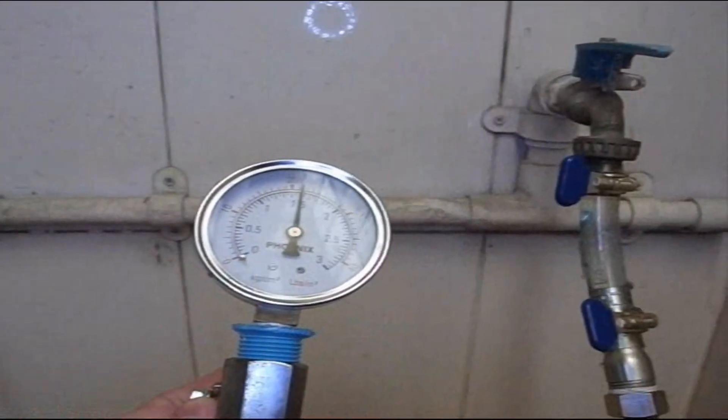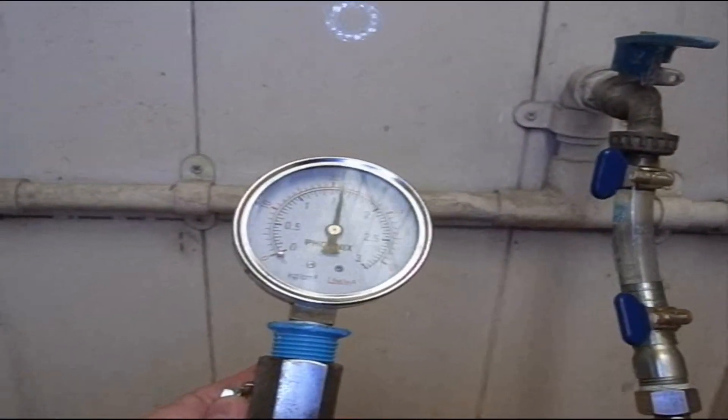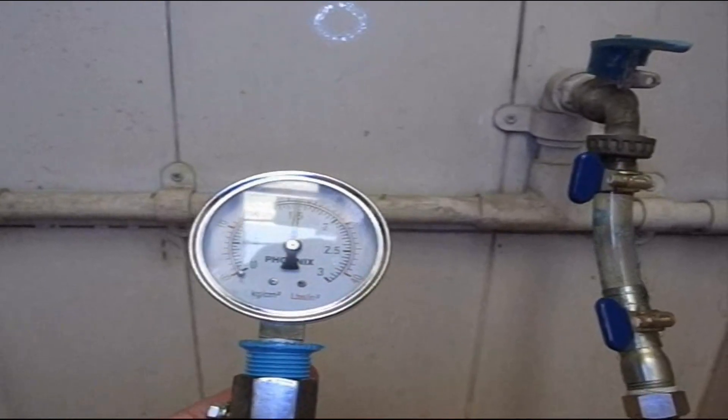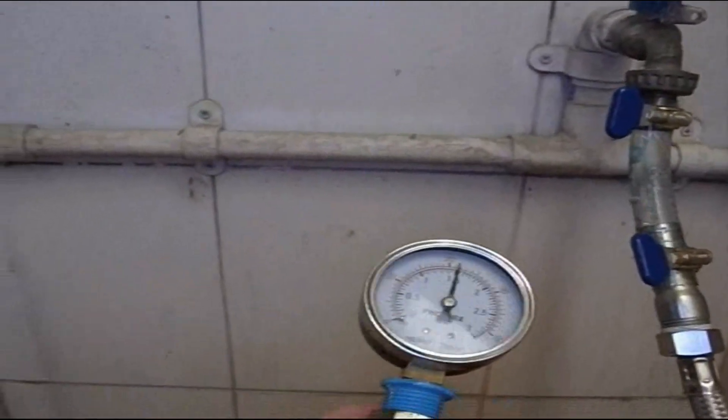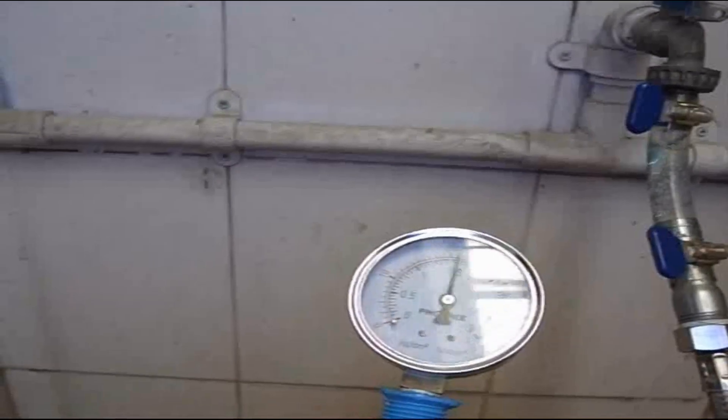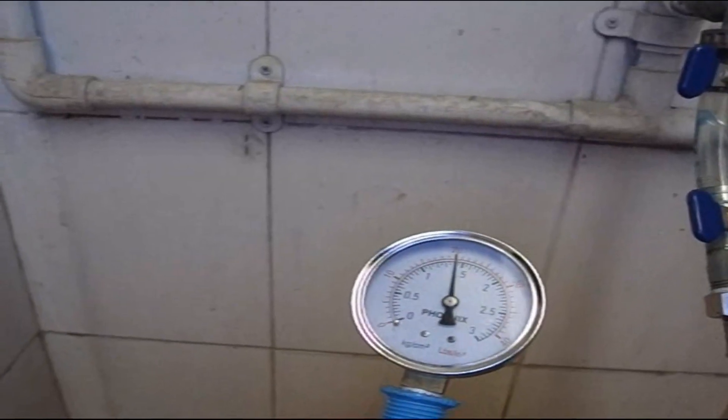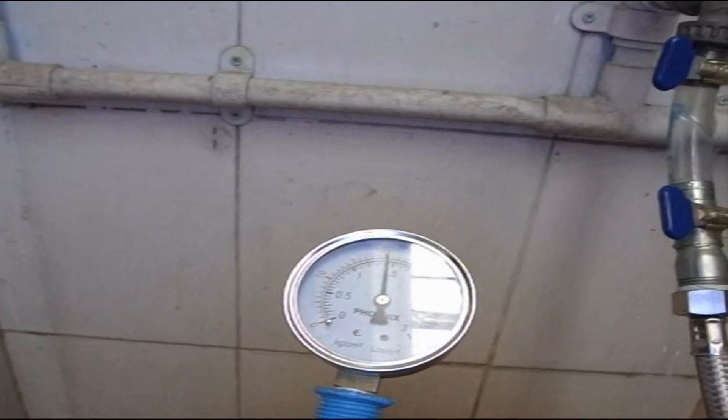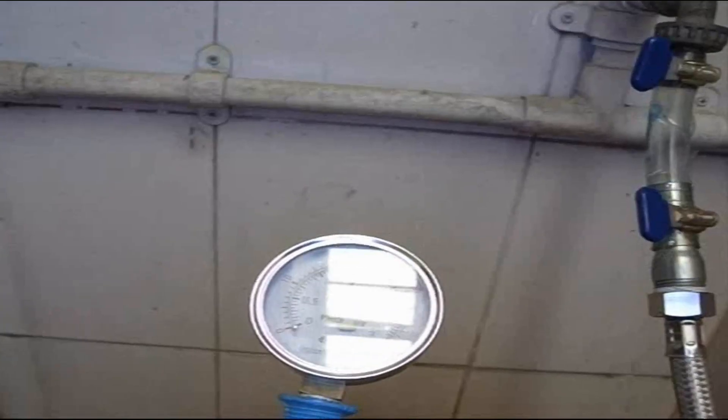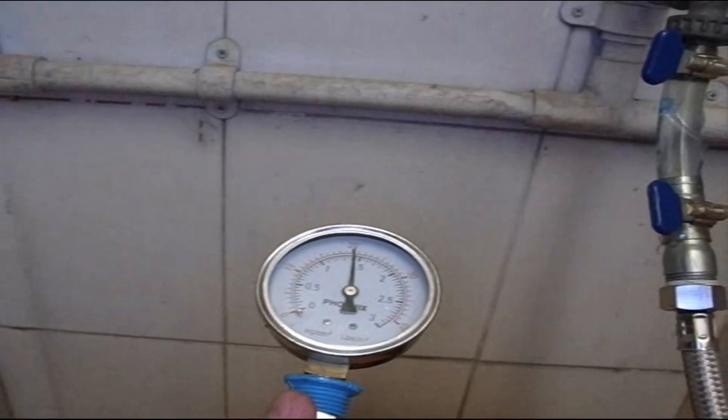Here's another faucet at the back of the house. It's also 21. Let's open it up and see what happens. It only drops down to 20. It doesn't have as much loss as the one in the front of the house.